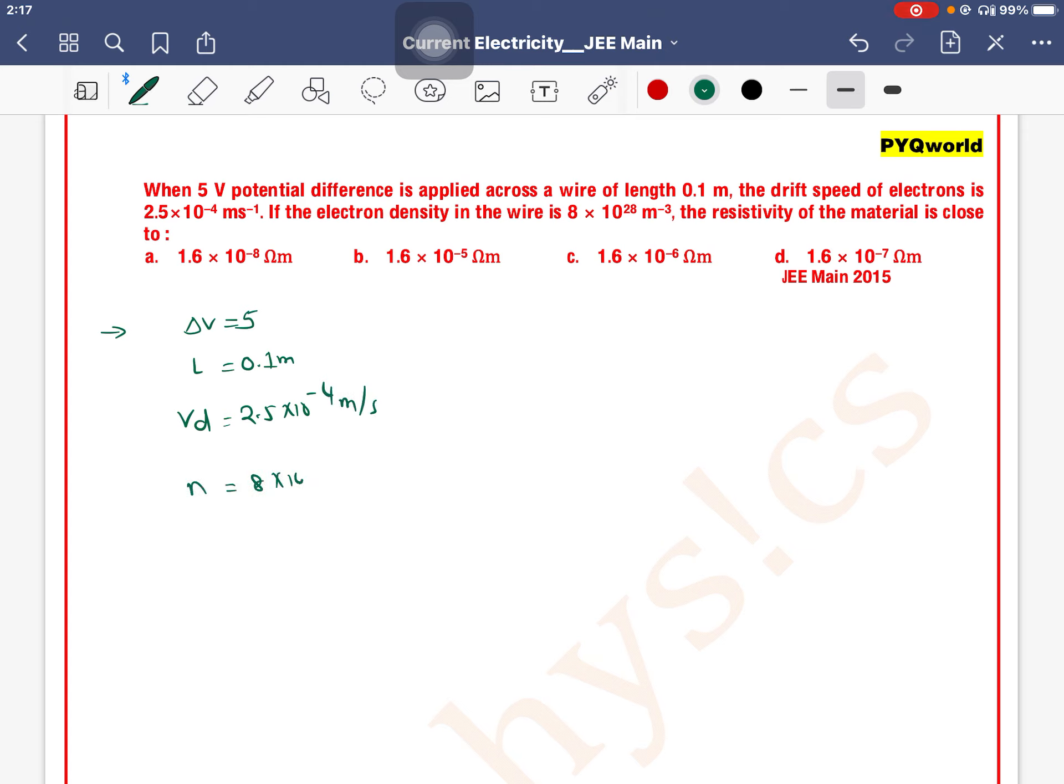...8 × 10^28 m^-3, the resistivity of the material is close to what? We know that current density j is equal to sigma into E.